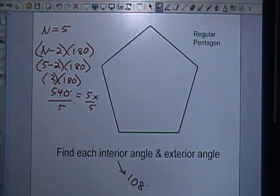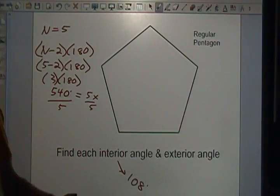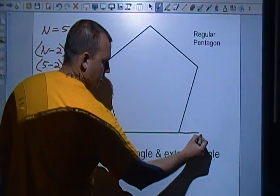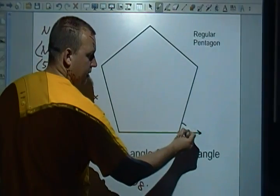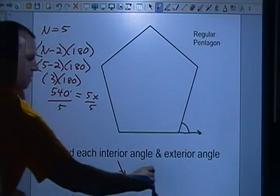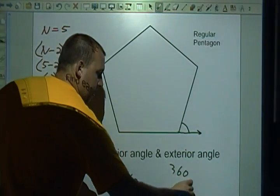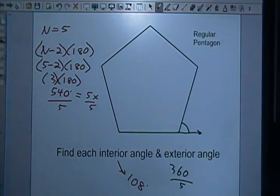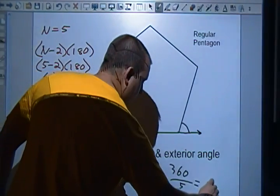Each exterior angle - well, exterior angles look like this here, and they're all the same. And if they all add up to equal 360 and there's 5 of them, if I divide by 5, you get 360 divided by 5 ends up being 72 degrees.